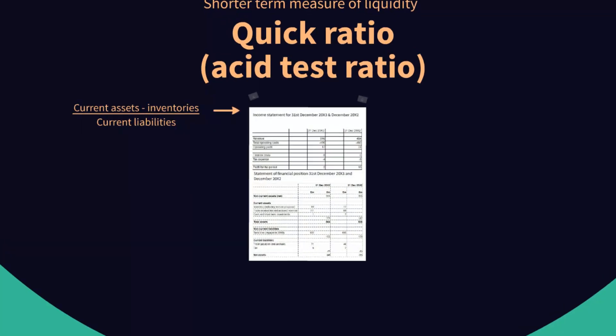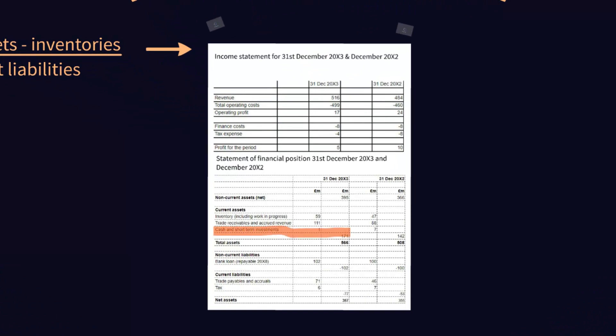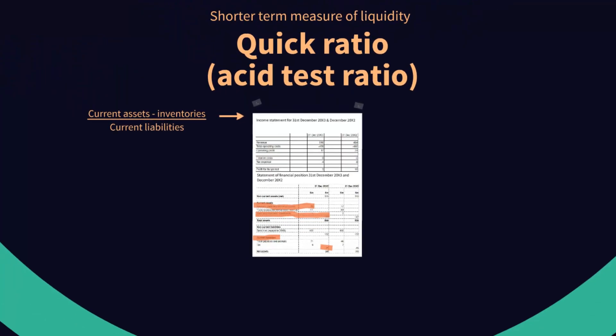Looking back at the statement, we have total current assets of £171 million, but we need to remove that £59 million in inventory. Then again, we look at our current liabilities of £77 million, which of course do not change. So: 171 million minus 59 million for inventory, divided by current liabilities of 77 million, gives us 1.45. So even in the short term using the quick ratio, we still have more assets than we have liabilities.